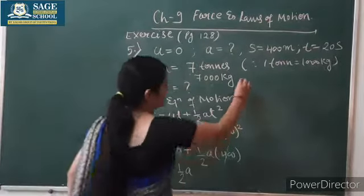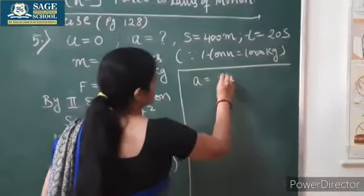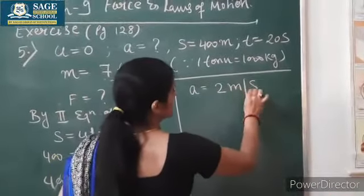I am writing here, look here. So from here, acceleration is equal to 2 meters per second squared.